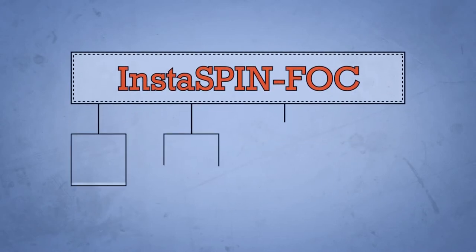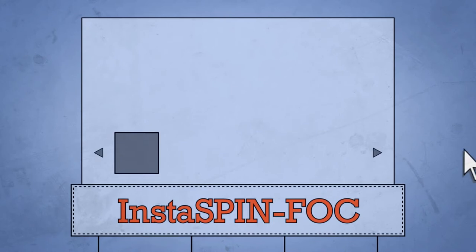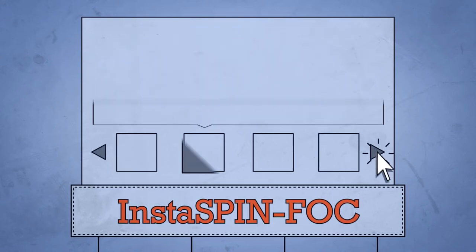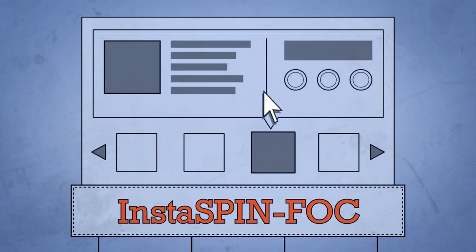InstaSpin FOC represents a new method, enabling surprisingly fast parameterization of various motors. Software-based parameterization is done using a GUI, which automatically discovers all the essential parameters. Therefore, fine-tuning the control system is a very straightforward and efficient process.